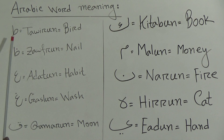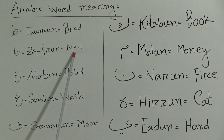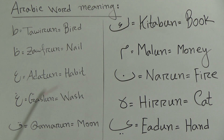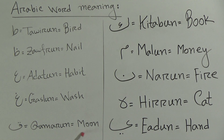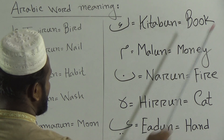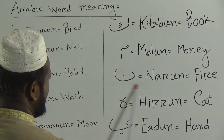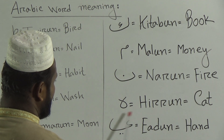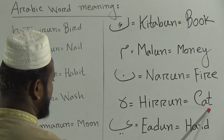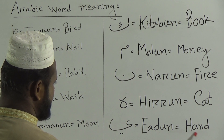Now let me repeat with spellings. Taa for Tairun — Tairun means bird, B-I-R-D. Zaa for Zufrun — Zufrun means nail, N-A-I-L. Ain for Adatun — Adatun means habit, H-A-B-I-T. Ghayn for Ghuslun — Ghuslun means wash, W-A-S-H. Qaaf for Qamarun — Qamarun means moon, M-O-O-N. Kaaf for Kitabun — Kitabun means book, B-O-O-K. Meem for Malun — Malun means money, M-O-N-E-Y. Noon for Narun — Narun means fire, F-I-R-E. Haa for Hirun — Hirun means cat, C-A-T. Yaa for Yadun — Yadun means hand, H-A-N-D.